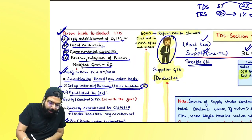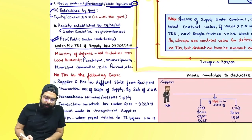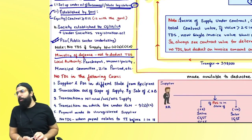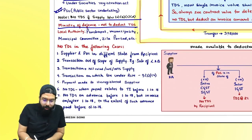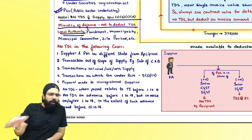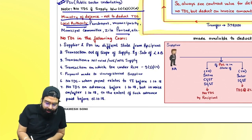If A, B, C, or D categories are supplying among each other, TDS provisions are not applicable. The Ministry of Defence is a Central Government department but will also not deduct TDS in such transactions. Local authority always means Panchayat, Municipality, Zila Parishad, and similar bodies.